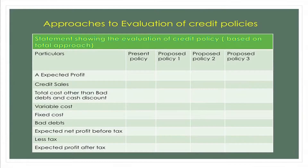We can take up a practical example using the total approach method and the net approach method for evaluating a credit policy. On screen is a tabular representation showing evaluation of credit policies based on total approach. Column 1 has particulars, column 2 shows the present policy, and there are three proposed policies — Policy 1, Policy 2, and Policy 3. Under section A, we calculate expected profits: credit sales, total cost other than bad debts and cash discounts, variable cost, fixed cost, then bad debts, to arrive at expected net profit before tax.